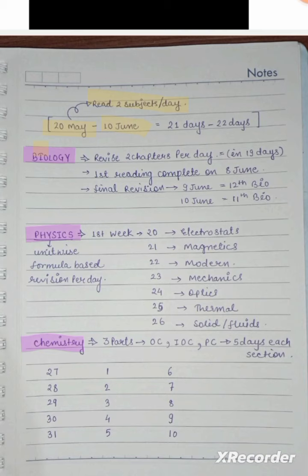On the 10th of June, what do you want to do? On May 20th to 10th of June there are 22 days, in which we will start bio. We will revise 2 chapters per day. In 19 days, complete the bio of 38 chapters from 11th and 12th. In 1 day, 2 chapters in bio is not a big deal at this time.